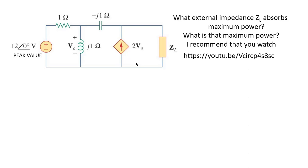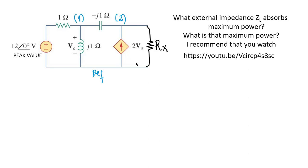At that port, find the Thevenin equivalent — that is obviously the first step in the solution to this exercise. I replace that external impedance with a resistor R_X. What are the reference node and nodes one and two? Choose the direction for the currents in the branches, and we begin.